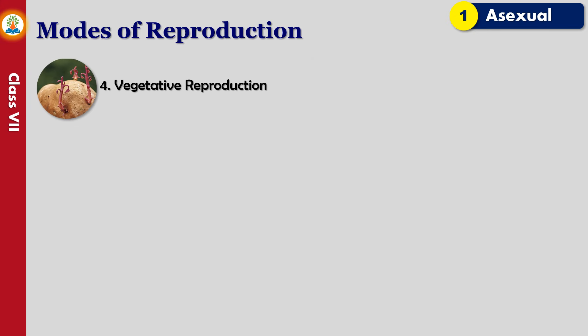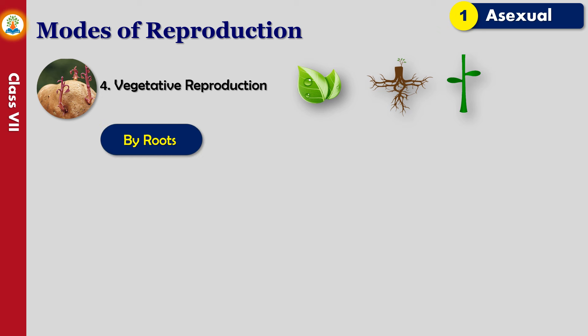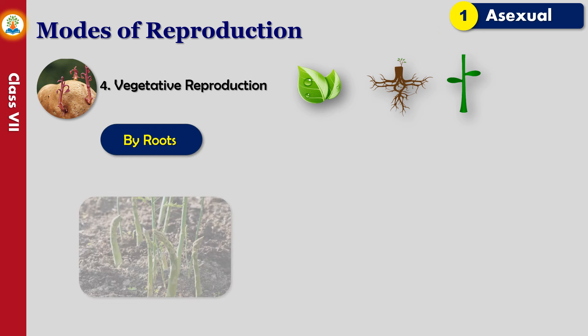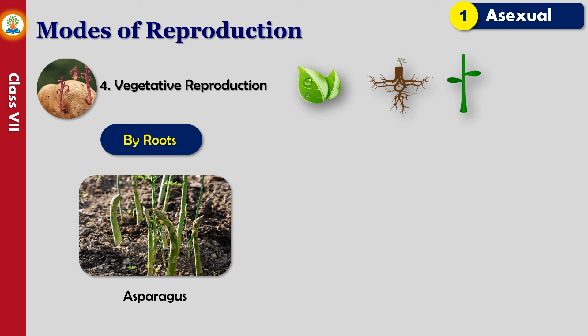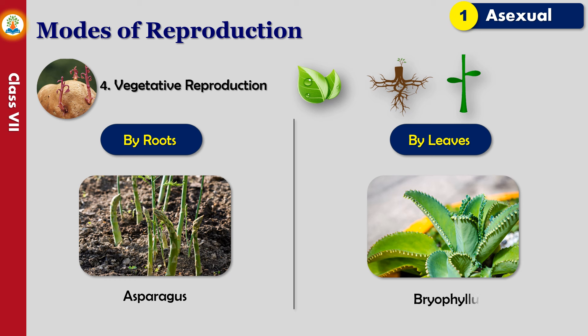In vegetative reproduction, when a new plant is produced from the vegetative parts of a plant such as leaves, roots, and stem, it is called vegetative reproduction or propagation. Roots of certain plants — sweet potato, asparagus, and dahlia — are swollen due to storage of food. These roots have buds on them, and when these swollen roots are planted in the soil, they grow into new plants. Plants such as Bryophyllum can reproduce by growing plantlets from the notches present at the end of the leaf margins.